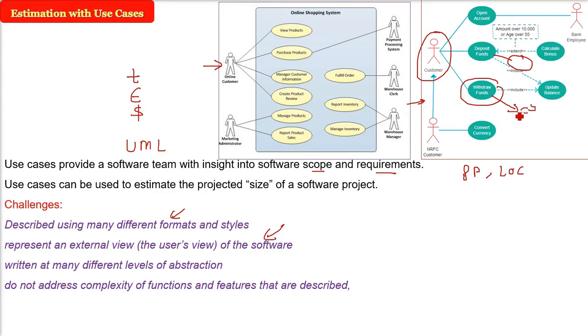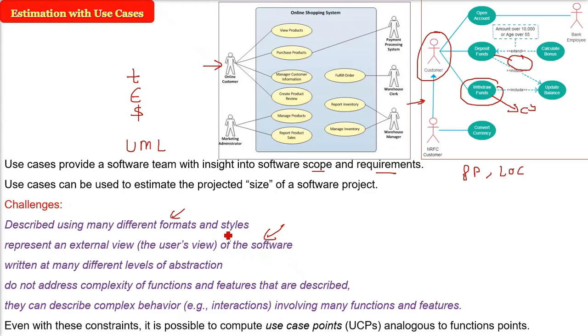The use case does not address the complexity of functions and features that are described. It just shows functional features, who is going to interact and in what way. But use cases describe complex behavior through interactions, with transactions involving many functions and features. We can use use case points (UCPs), analogous to function points.